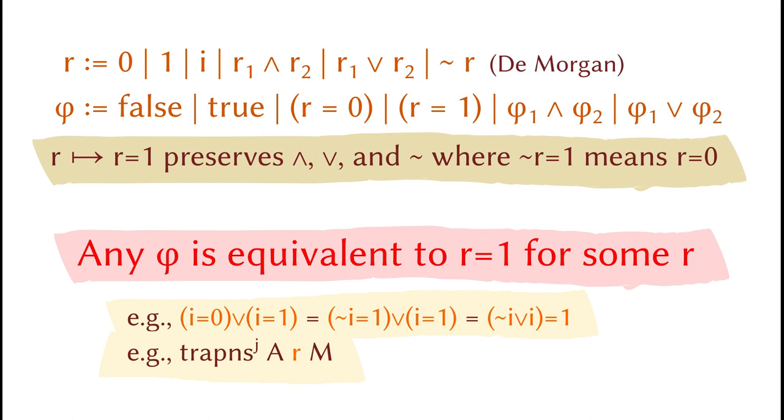For example, the constraint i equals to zero or i equals to one can be rephrased as the equation between the join of i and the reversed i and one. This lemma explains why the coercion operator is taking a dimension expression instead of a dimensional constraint. Every constraint can be represented by an expression. Again, this only works in this variant of cubical type theory.